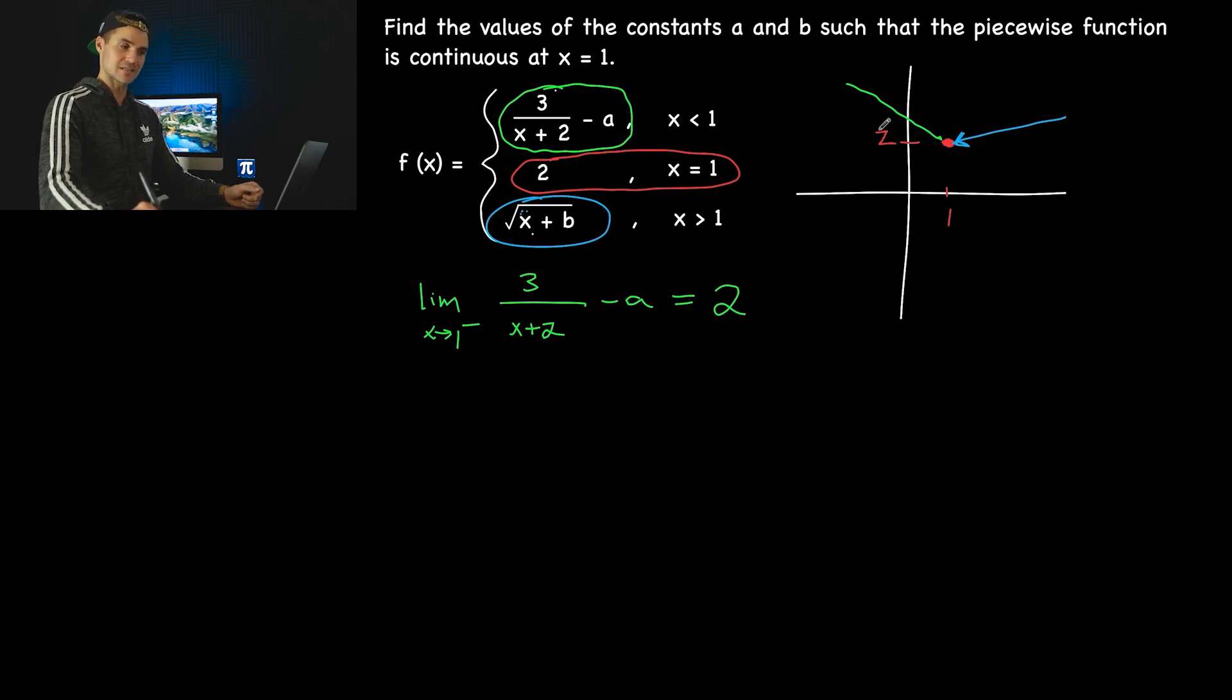has to equal 2. So the limit as x approaches 1 from the positive side of square root of x plus b has to equal 2 as well. If both functions approach that y value of 2 from both sides, then the entire piecewise function is continuous at x equals 1.